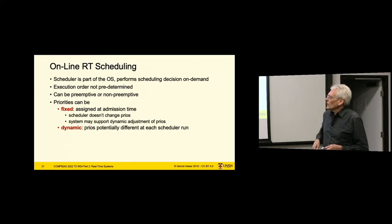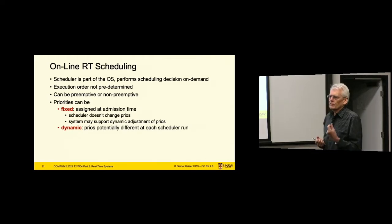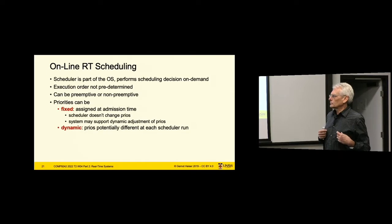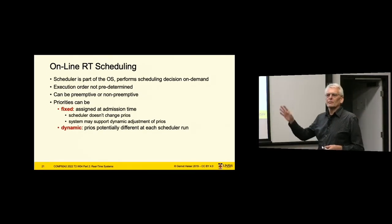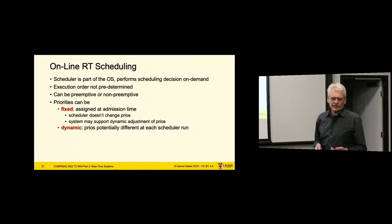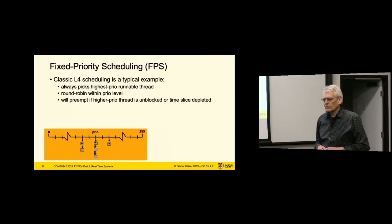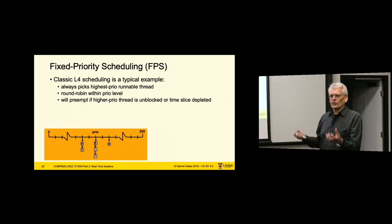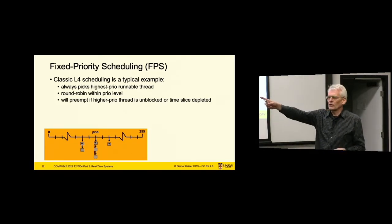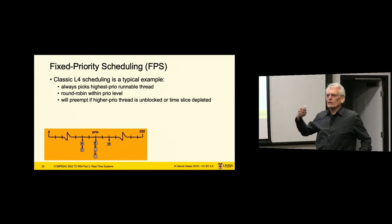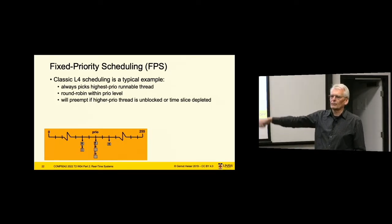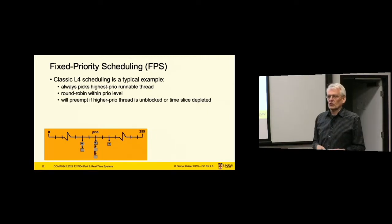If you hear dynamic priorities, you probably think of something like the fair share scheduler in Linux. With fixed priority scheduling, every job has a fixed priority assignment. In our terms, threads have fixed priorities and the OS will never change them. You have a range of priorities; scheduling simply picks a runnable thread at the highest priority. If you have multiple threads at the same priority, they run round-robin. This is pretty much the original L4 scheduling model. Depending on the system, preemption may or may not be allowed, and L4 always did allow preemption.